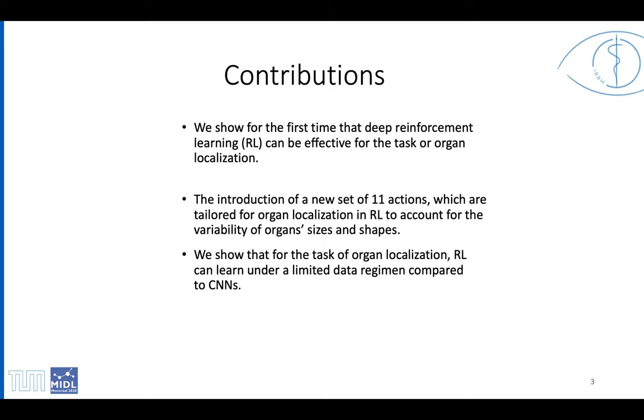The introduction of a new set of 11 actions which are tailored for organ localization in RL to account for the large variability of organ sizes and shapes. We show that for the task of organ localization, RL can learn under a limited data regimen compared to CNNs.